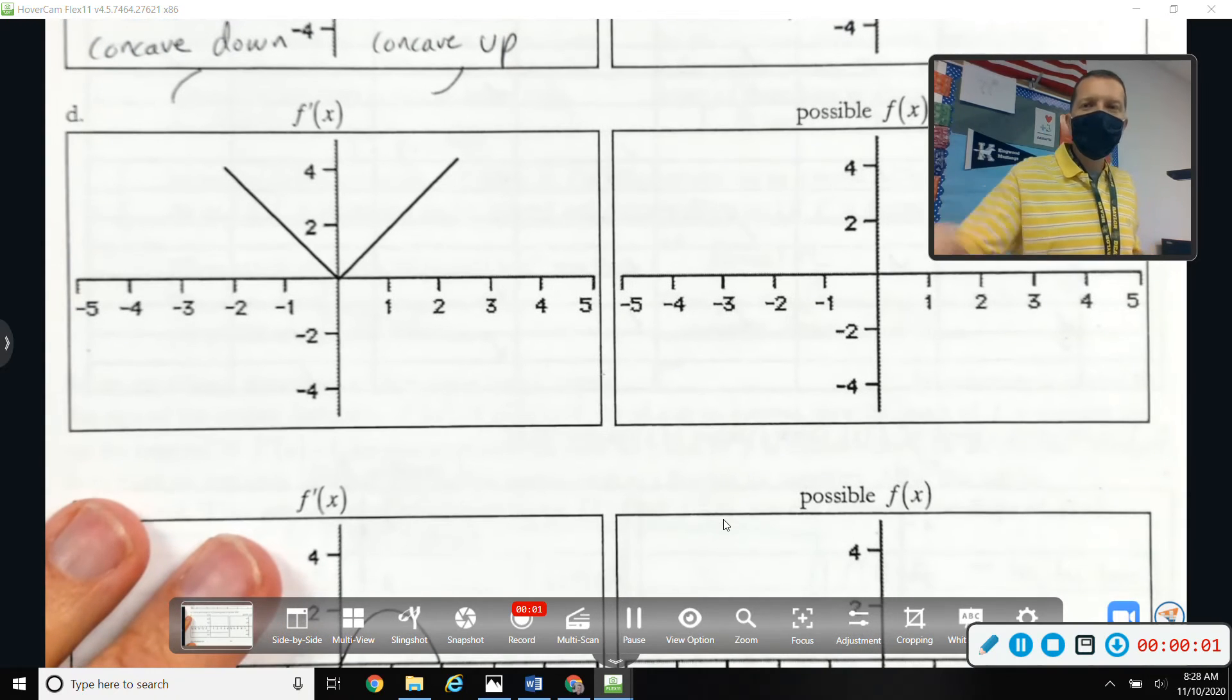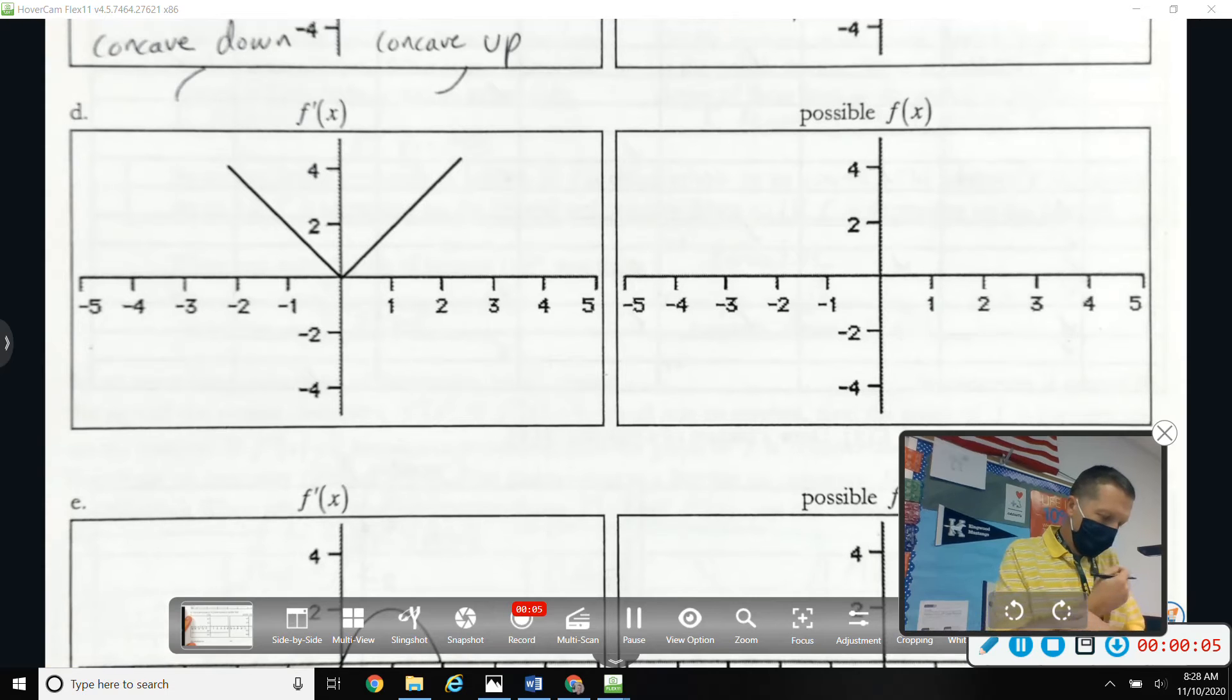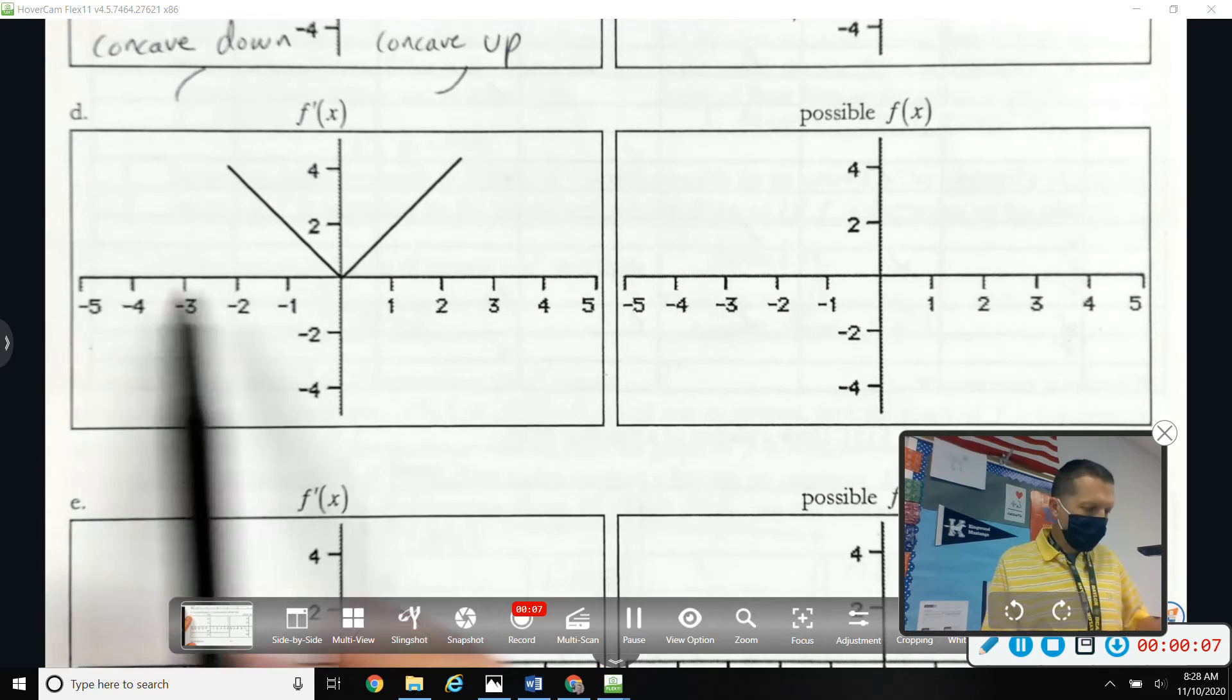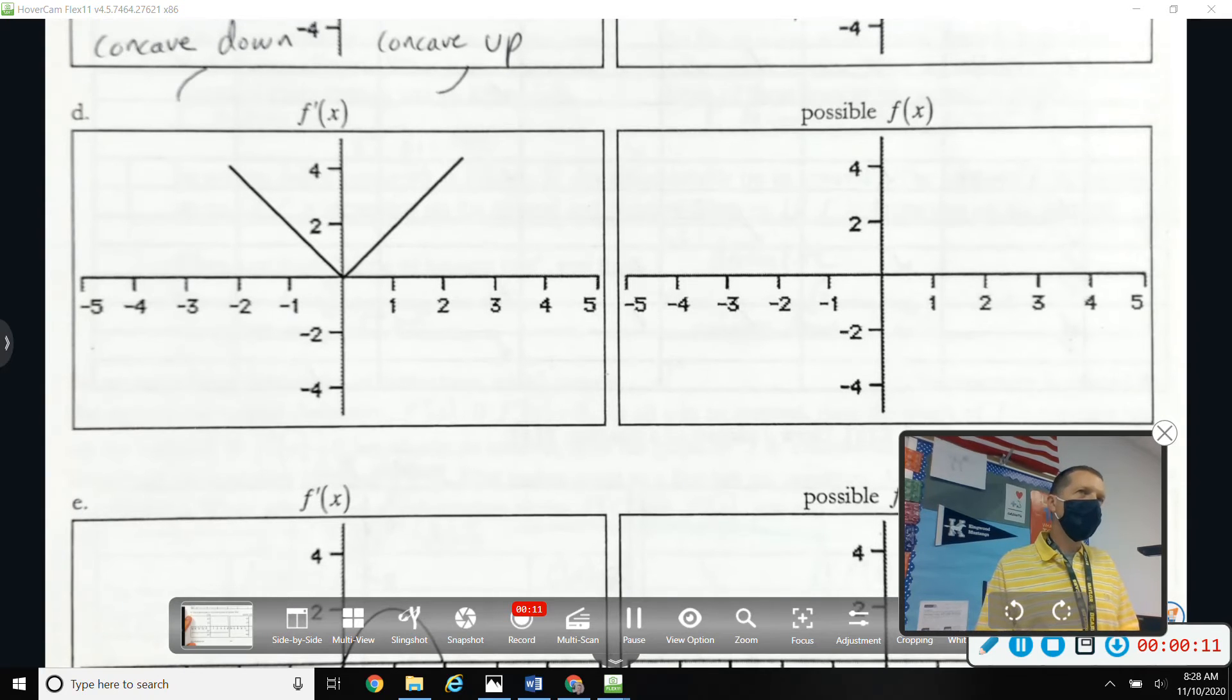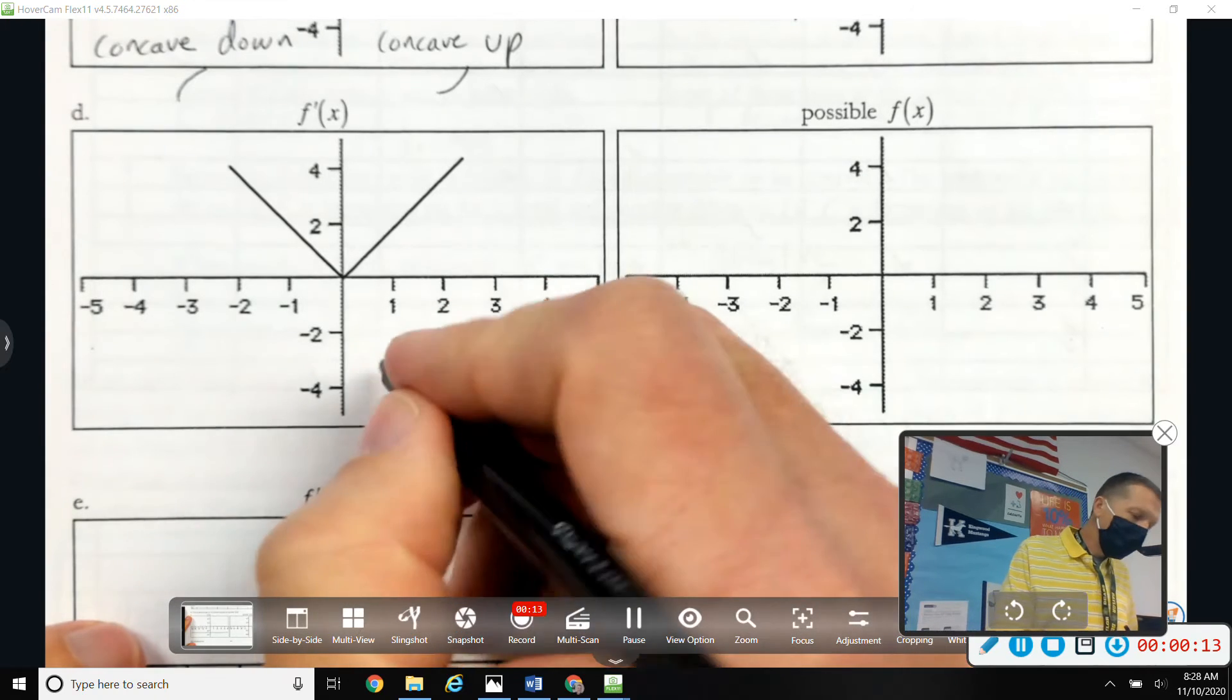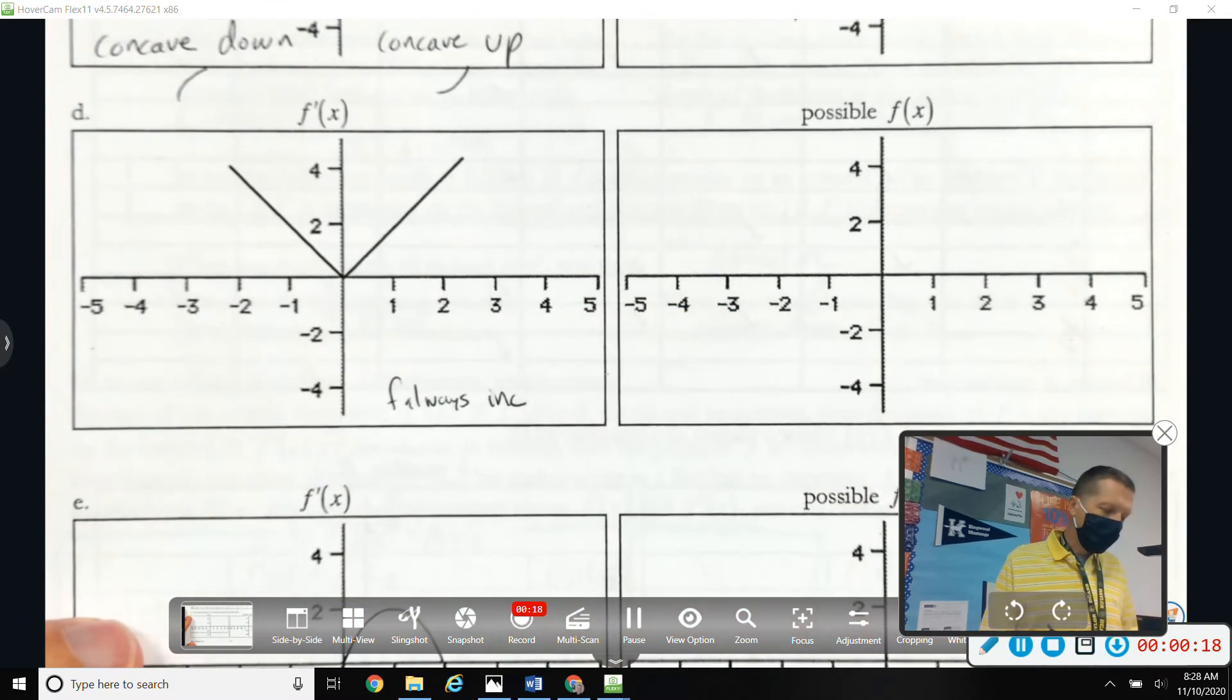All right, so D and E on yesterday's worksheet. So tell me some things you know looking at this graph of F prime. Okay, F is always increasing because F prime is always positive.